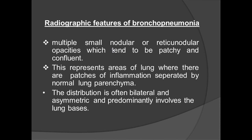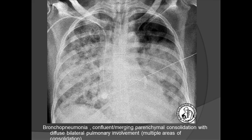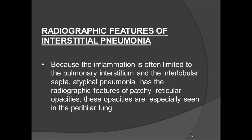Radiographic features of bronchopneumonia include multiple small nodular and reticulonodular opacities that tend to be patchy and confluent, representing patches of inflammation separated by normal lung parenchyma. A classic example shows bilateral non-segmental consolidation in the lingula and right upper lobe perihilar region with linear and nodular shadows — this is bronchopneumonia, most commonly seen in viral and some bacterial infections.